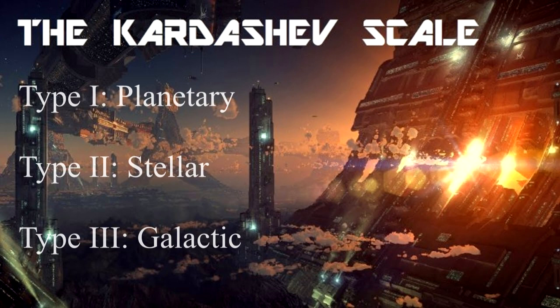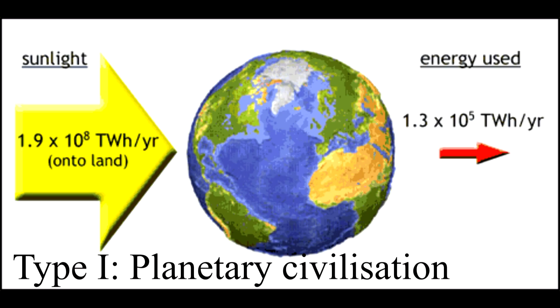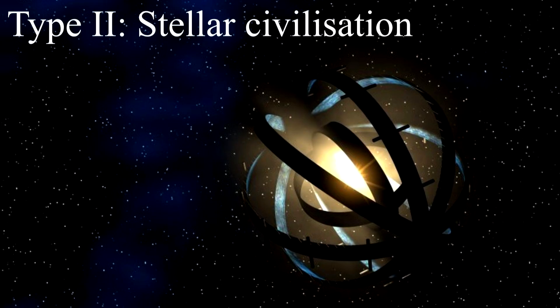A quick recap on the normal Kardashev Macro Scale. Type 1 is called Planetary Civilization — a civilization that has managed to utilize the total energy that reaches it from its parent star. A Type 2 civilization, called a Stellar Civilization, has managed to utilize the total energy from that parent star, theorized to be in the form of something like a hypothetical Dyson Sphere.